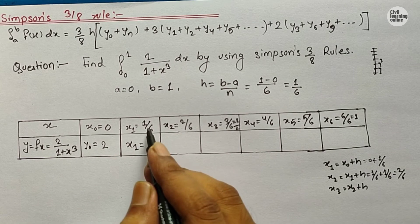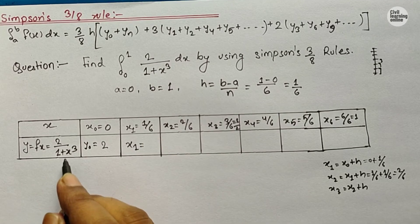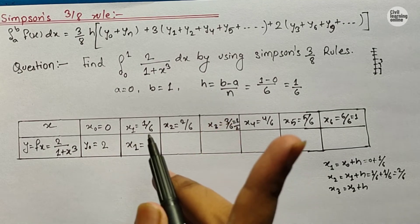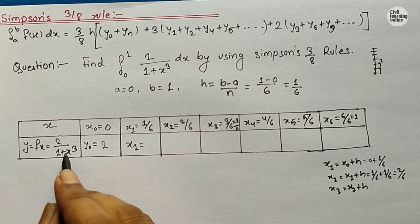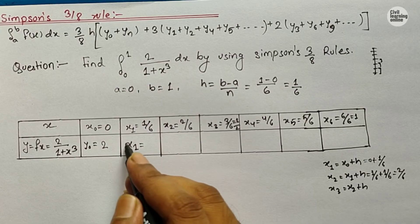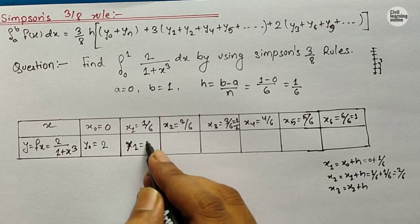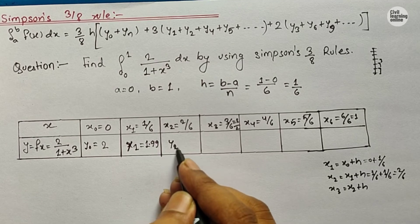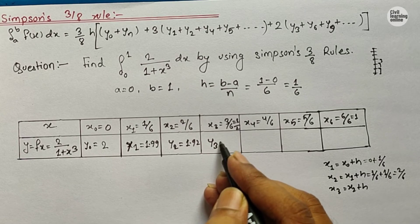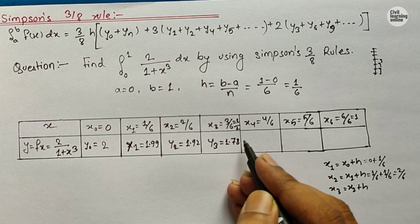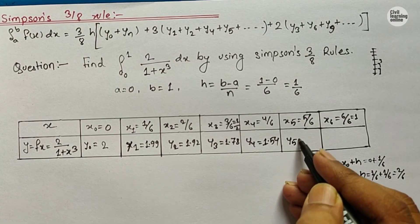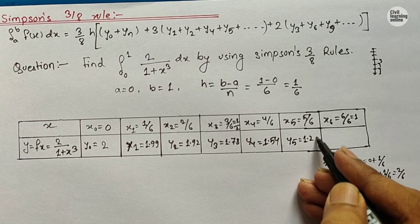So either you can put it in fractional form x equals 1/6, or you can convert this fractional form into decimal using a calculator and directly put that decimal value. We will get y1 equals 1.99. Similarly, y2 equals 1.92, y3 equals 1.78. Similarly, y4 equals 1.54, y5 equals 1.26, and y6 equals 1.